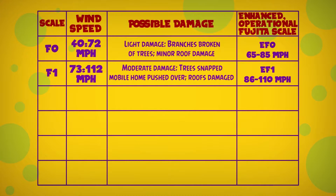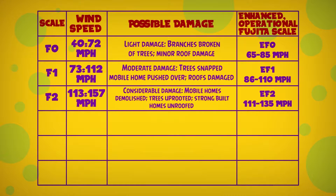F1: 73 to 112 miles per hour — moderate damage, trees snapped, mobile homes pushed over, roofs damaged. F2: 113 to 157 miles per hour — considerable damage, mobile homes demolished, trees uprooted, strong built homes unroofed.